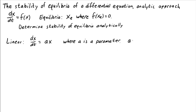Let's assume that a is not equal to 0, because if a equals 0, then every point is in equilibrium since dx/dt would be 0 for any x. If a is not equal to 0, then this equation has only one equilibrium: x equals 0.